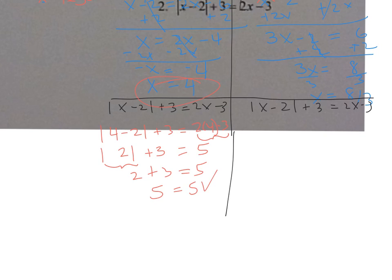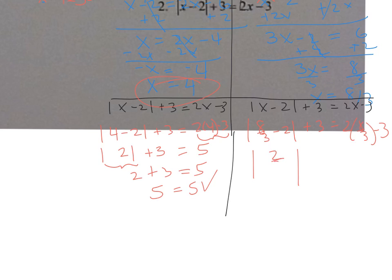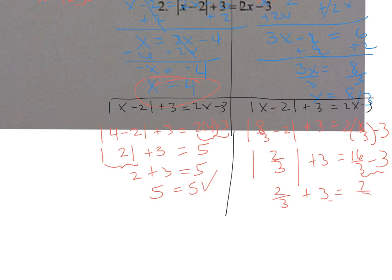Checking x equals eight thirds: the absolute value of eight thirds minus two plus three should equal two times eight thirds minus three. Eight thirds minus two is two thirds, and the absolute value of two thirds is two thirds, plus three gives eleven thirds on the left. The right side is sixteen thirds minus three, which is seven thirds. Eleven thirds does not equal seven thirds, so eight thirds is an extraneous root — cross it out. The only solution is four.